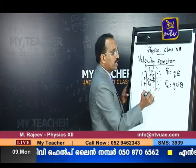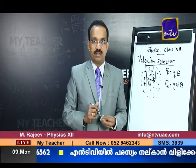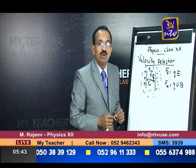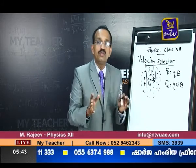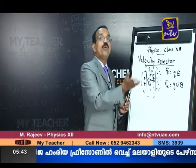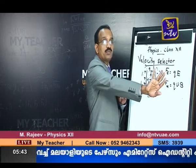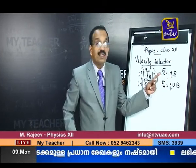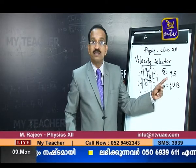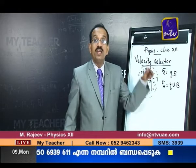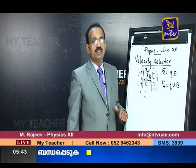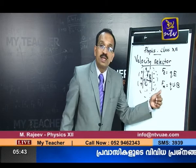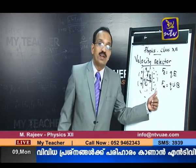Those charged particles coming under the influence of both fields — we call this crossed electric and magnetic fields, meaning perpendicular fields. They will experience forces in both ways, but these forces are in opposite directions. The force by the electric field depends only on qE, not on velocity. Whereas the force by the magnetic field Fm = qVB depends on velocity. So slow-moving particles will have less magnetic force, while fast-moving particles will have more magnetic force.